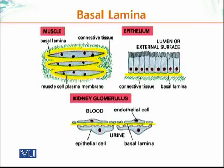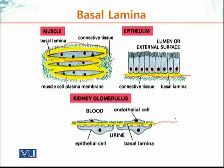Individual muscle cells are enclosed in a sheet of basal lamina and interact with connective tissue through it — connective tissue doesn't directly contact the muscle cells. In epithelium, basal lamina forms a mat on which epithelial cells live and provides signaling. In the kidney glomerulus, basal lamina (shown in yellow) restricts larger molecules from blood from entering the urine.